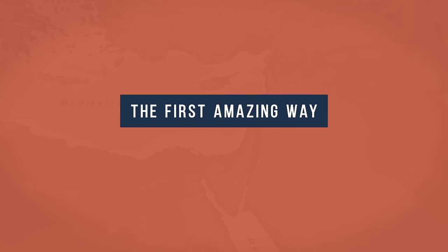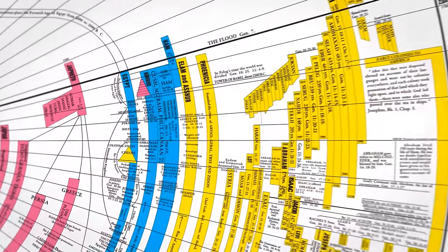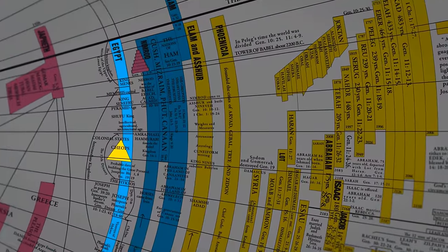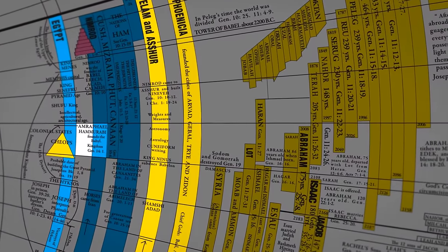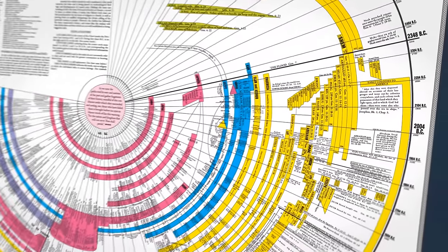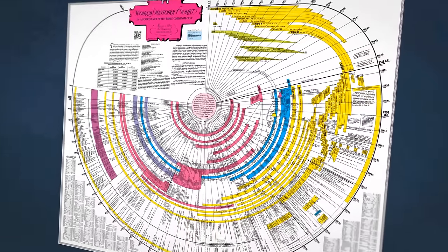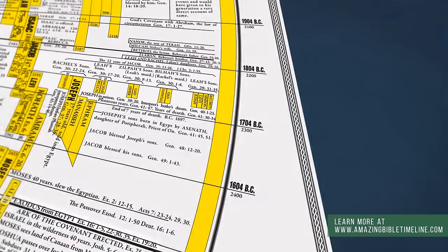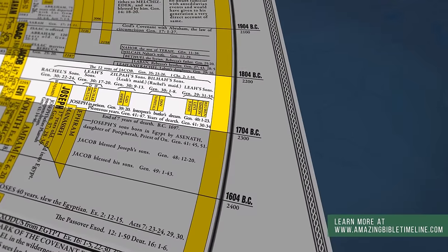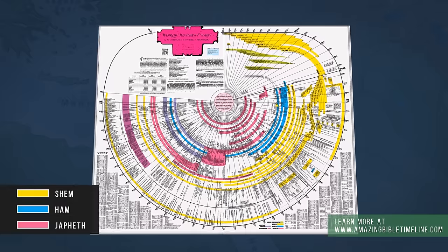The first amazing way: see all of Bible and world history in order and together. The timeline shows the beginnings of Egypt, Assyria, Babylon, Phoenicia, and Abraham. The stage is set for 4,000 years of struggle. You read about them, now see them in action. Each pie-shaped piece of the amazing Bible timeline is a century. The colors represent different nations from the sons of Noah.